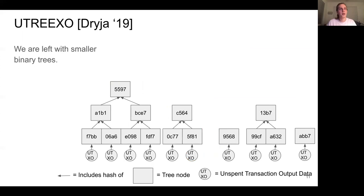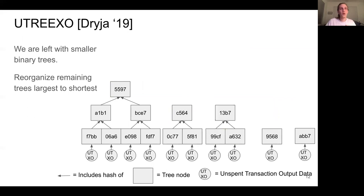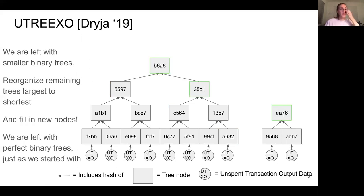When we delete the branch in red, we're left with a collection of smaller trees. We can then reorganize these trees from largest to smallest. And then we can get back to a state where we have binary trees by pairing adjacent trees and filling in the hashes. So here we combine the two size 2 trees into a size 4 tree. We combine that with the other size 4 tree to get a size 8 tree. And we combine the two size 1 trees into a size 2 tree.